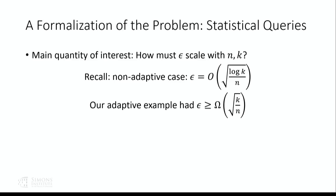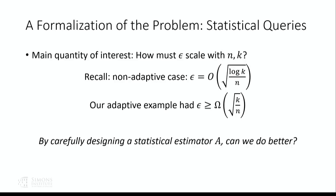We'll say a statistical estimator is epsilon-delta accurate if, for any set of k queries asked by an arbitrary data analyst and no matter what distribution the data was drawn from, with probability one minus delta, in the worst case over all questions asked, the answers had error only epsilon compared to the real distributional answers. Our main quantity of interest is how quickly confidence interval width epsilon must scale with the number of questions, and how quickly it scales down with dataset size. In the non-adaptive case with Hoeffding and union bound, confidence intervals scale only with log k. Our overfitting attack showed that naive empirical estimation requires width scaling with square root of k — exponentially worse.